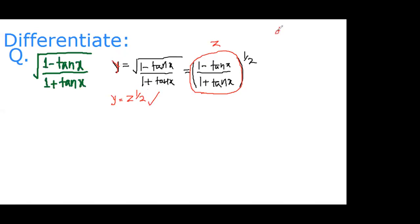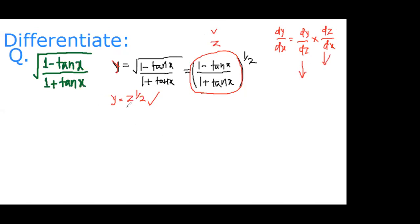As discussed in my previous video on differentiation, to find dy/dx we use the chain rule: dy/dx = dy/dz × dz/dx. We need to find the differentiation of y with respect to z and differentiation of z with respect to x.